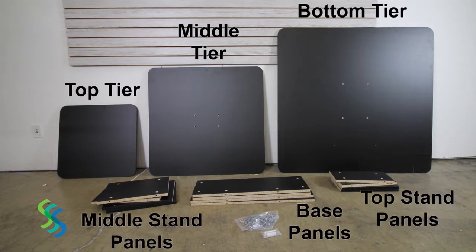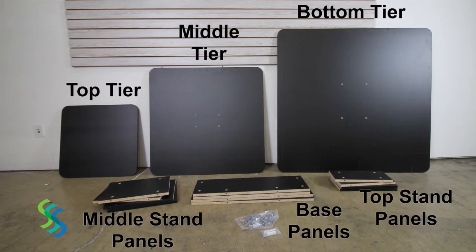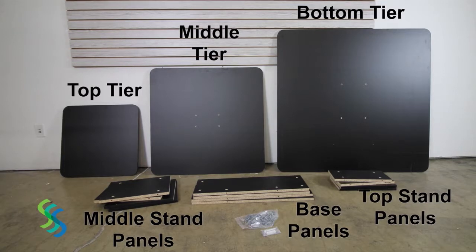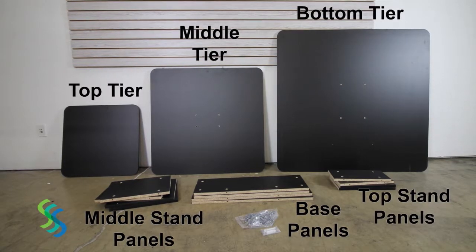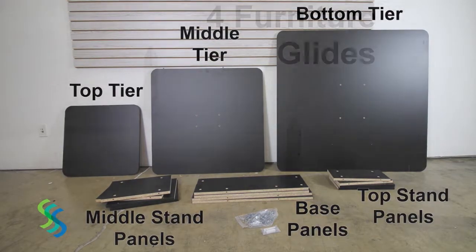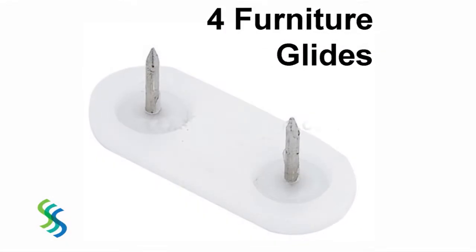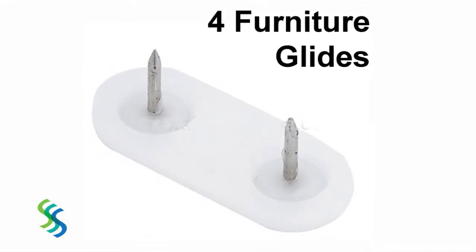The table is shipped with three square tiers of various sizes: small, medium and large, as well as 12 panels which are used to create a stand for each of the three tiers. Also included are four plastic furniture glides and 40 cam locks.